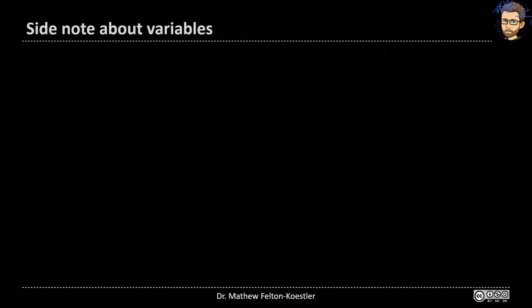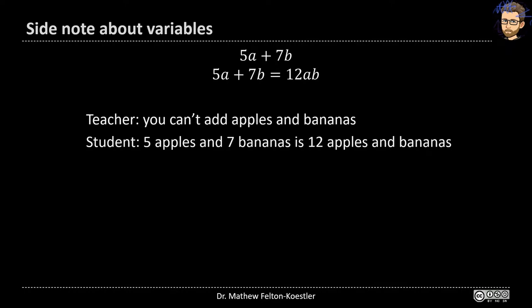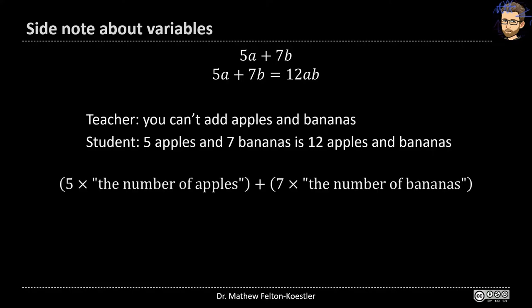I want to make a quick side note about variables and some misconceptions kids sometimes have. We might have a statement like 5a plus 7b in math class, and kids will often incorrectly write that that equals 12ab. A teacher might respond saying you can't add apples and bananas. The logic behind this error is: I have five apples and seven bananas — that's 12 apples and bananas. But the problem is that's not actually what that expression says. 5a really means five times the number of apples, not just apples.